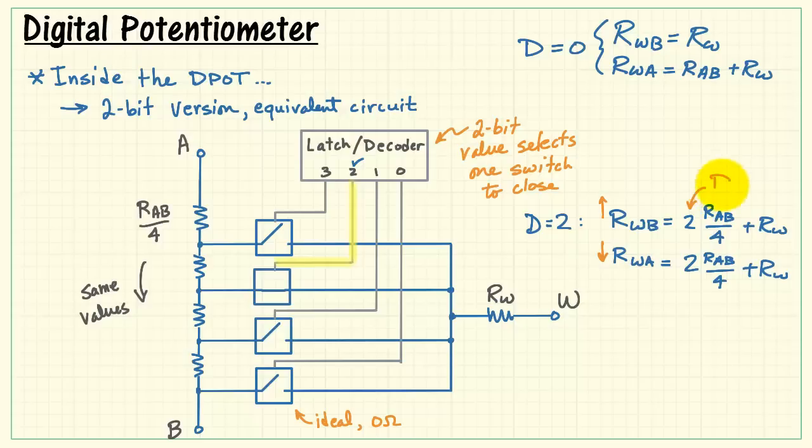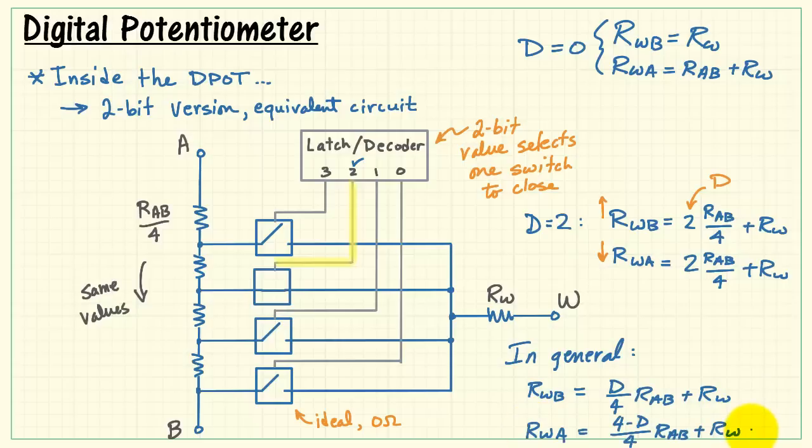And it turns out that this particular two, in fact, is the digital value D. Remember when D was zero, we saw no contribution from RAB. In general then, the wiper resistance to B terminal is this equation, and the wiper resistance to A terminal is this equation. So we get two resistances and they go in opposite directions as D increases or decreases. Now for the 8-bit version, you would simply scale this up. You'd have 256 resistors and 256 switches.